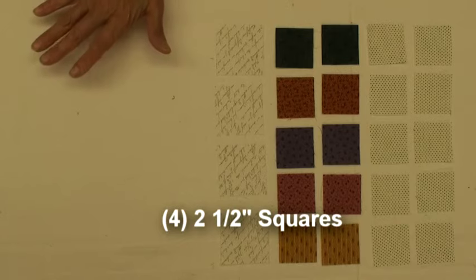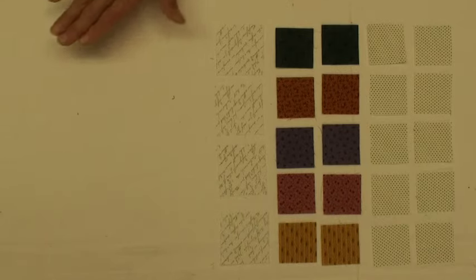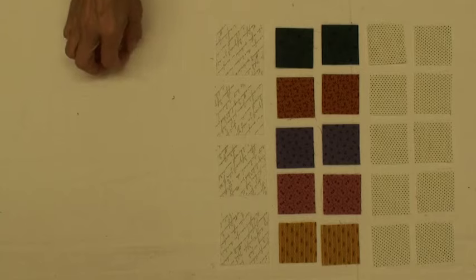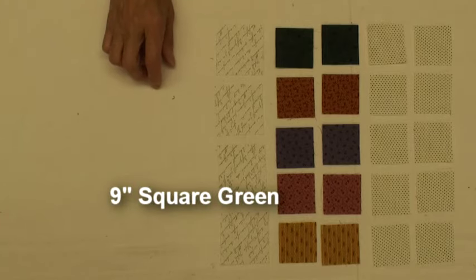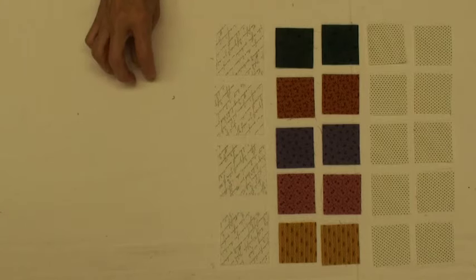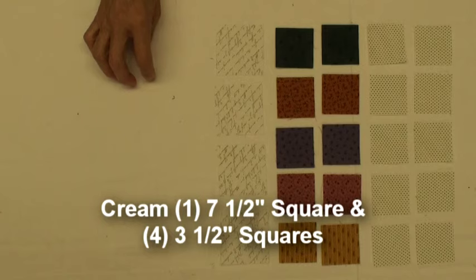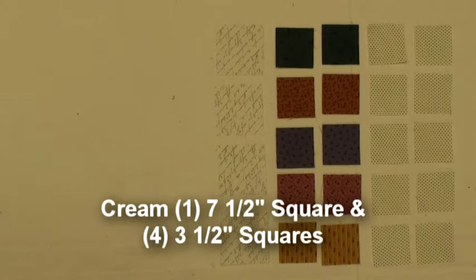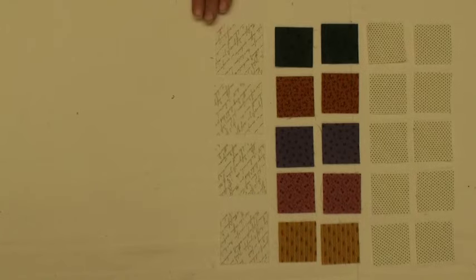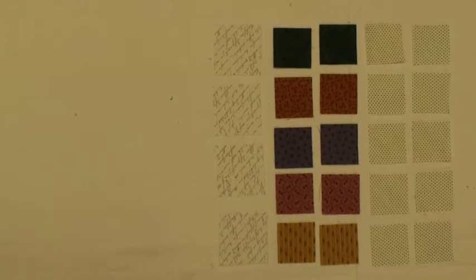Of course you will still have your outside star points as well. You'll cut your one nine inch square of your green, you'll cut one seven and a half inch square of your cream, and four three and a half inch squares to do those flying geese on the outside. But let's get going on this because I've got some fun things to show you.